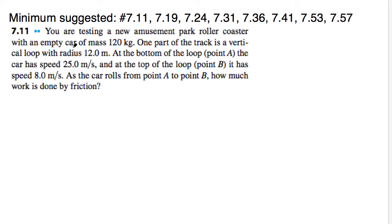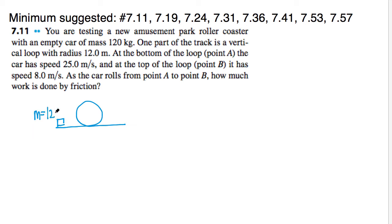Starting with problem 7.11. You are testing an amusement park roller coaster with an empty car of mass 120 kilograms. A certain part of the track is a vertical loop with a radius of 12 meters, which indicates it's a circle. At the bottom of the loop, which we're calling point A — let's go ahead and draw the loop — and we have a cart going around it, so the mass of this cart is 120 kilograms.